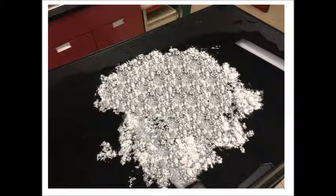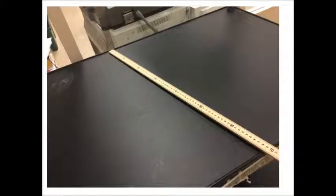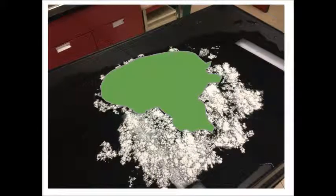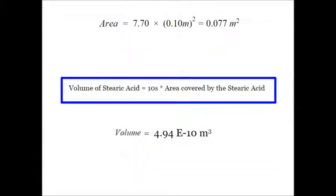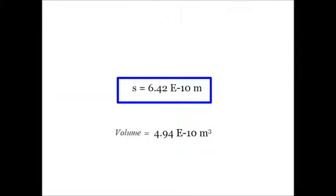We've got our baby powder ready, and our job is to find the area of this puddle. We can use a meter stick to find the size of the table and make a grid, isolate the puddle on the picture, and figure out how many squares are covered. The area I got: 0.077 meters squared. I now know the volume and the area, and I can solve for S.